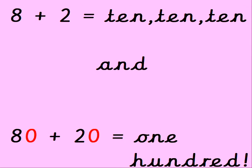8 add 2 makes 10, 10, 10, and 80 add 20 is 100.